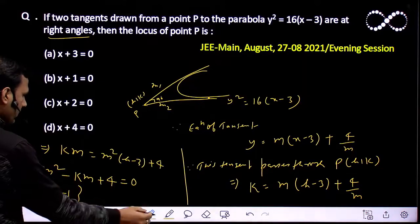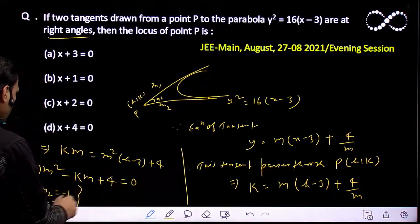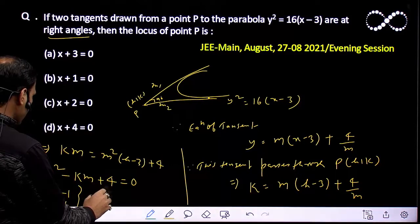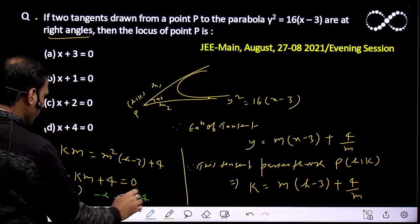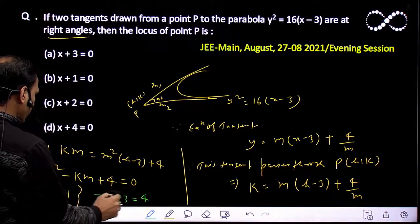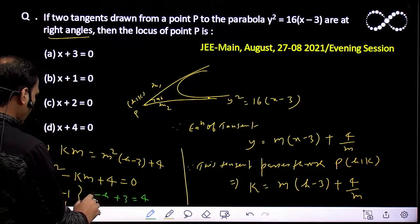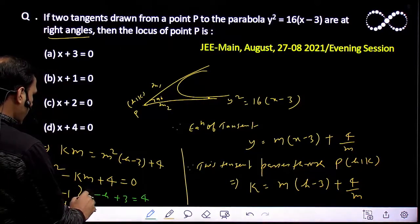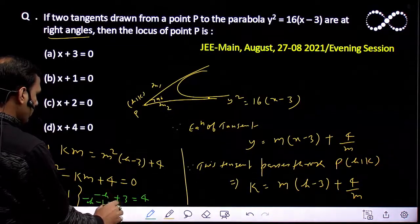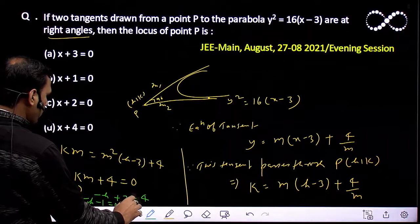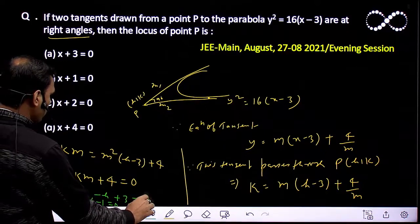Solving this: -h + 3 = 4, which gives -h = 1, or h + 1 = 0. That implies h + 1 = 0.